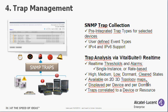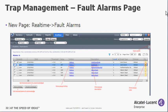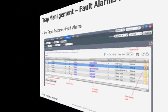You can map these incoming traps to specific devices, to specific domains, and even in some cases to a specific resource such as an interface on a device. The VitalSuite real-time fault alarms page was added to show alarms that were raised because of incoming SNMP traps.